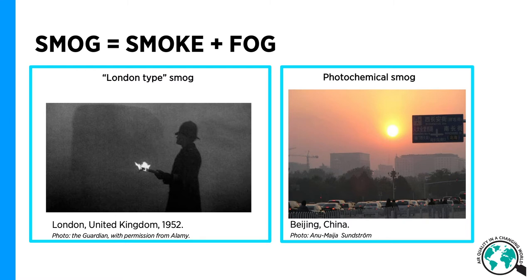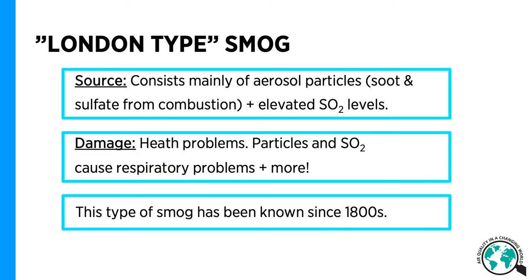We have two types of smog: London type or classic smog, and photochemical smog. Classic smog consists of high concentrations of sulfur dioxide and aerosol particles, both soot and sulfate particles. These originate from coal or other fossil fuel burning.